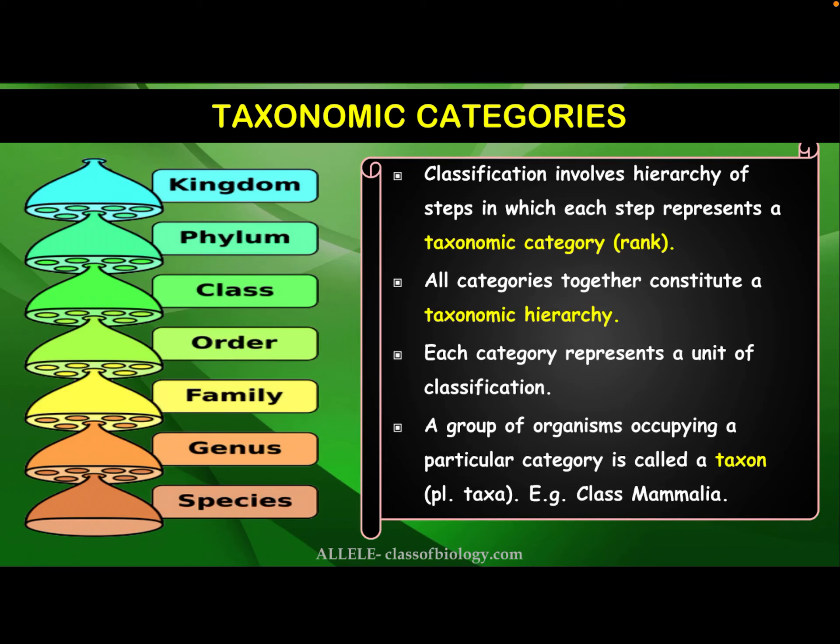Hello students. Today in this lecture we are going to discuss taxonomical characteristics or categories. If I talk about classifying organisms or studying classification, there are so many styles of different representation. Today we are going to see the most commonly used mechanism of classification, which includes different ranks to arrange organisms and their types or subtypes in a particular manner. Now, why these ranks or categories exist and how they are arranged is what we are about to see.